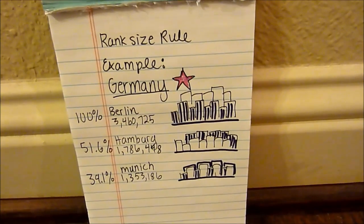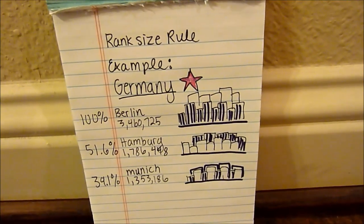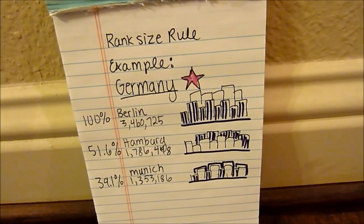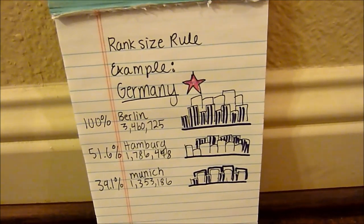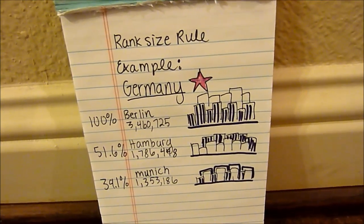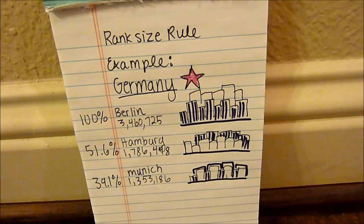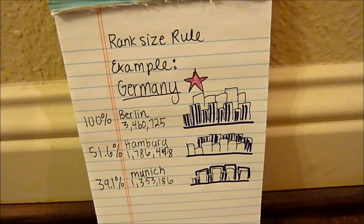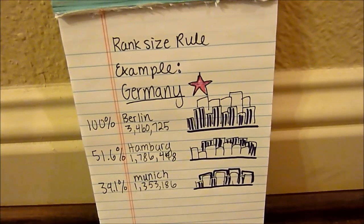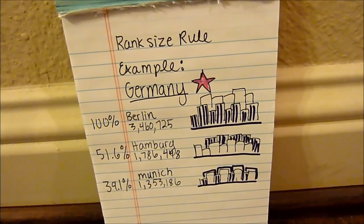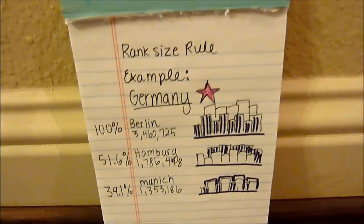Its second largest city, Hamburg, has a population of 1,786,448. The population of Hamburg is 51.6% of the largest city, which is roughly one half.